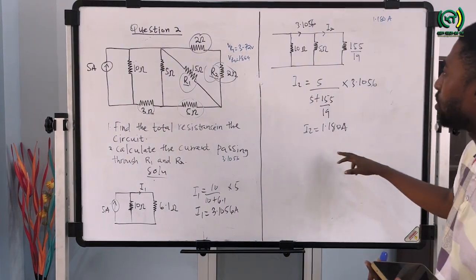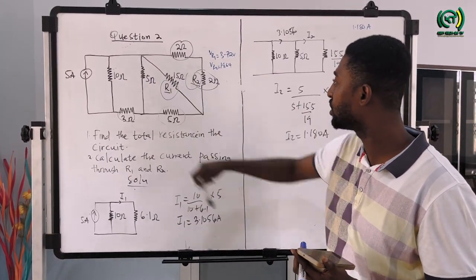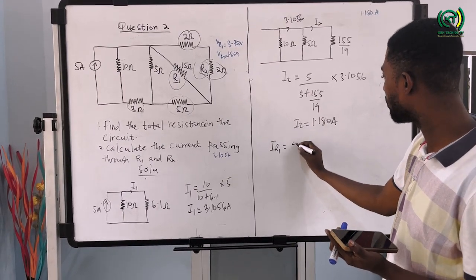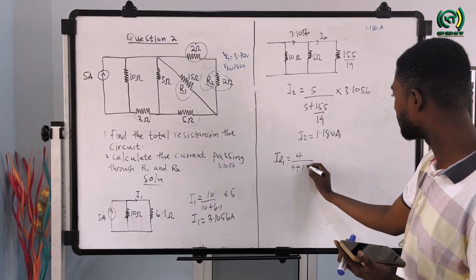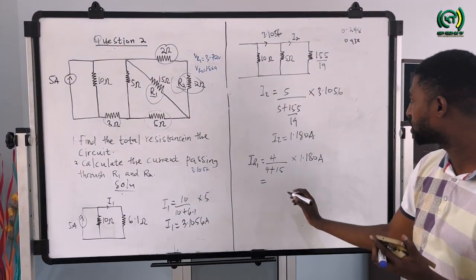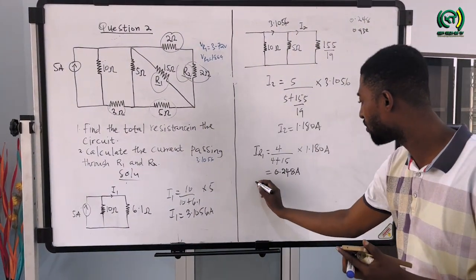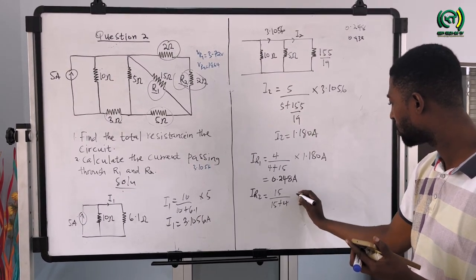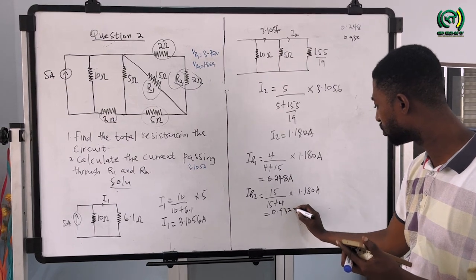Remember, I2 is the current supplying loads: the 2-ohm, 2-ohm, and 15-ohm resistors. To calculate the current flowing through resistor R1: IR1 equals 4 over (4 plus 15) times 1.180 amps, since these two resistances are connected in series. So IR1 equals 0.248 amps. Then for resistor R2 using the current divider rule: IR2 equals 15 over (15 plus 4) times 1.180 amps, which gives us 0.932 amps.